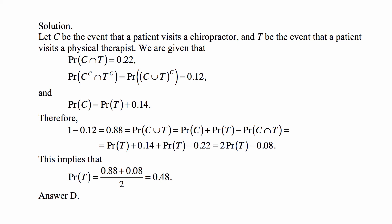So it becomes a simple linear equation. 0.88 is equal to two probabilities of T minus 0.08. So the probability of T is 0.88 plus 0.08 divided by 2, or 0.48. And that's answer D. And we are done.